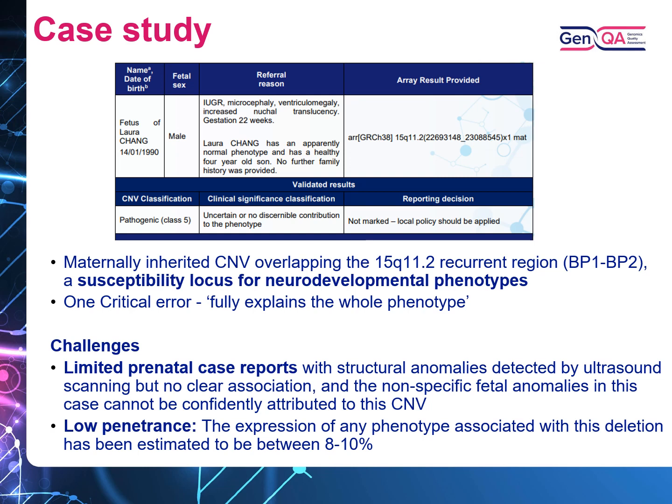Here we present the same 15q CNV as discussed for postnatal. It is a maternally inherited CNV overlapping the region of recurrent loss. It involves the NIPA1 neurodevelopmental locus that is known to have incomplete penetrance and variable expressivity. There are a limited number of prenatal case reports with structural anomalies detected by ultrasound; however, there is no clear association and the nonspecific fetal anomalies in this case cannot be confidently attributed to this CNV. Multiple clinical significance classifications are accepted, with the sole critical error given to a participant who stated that the CNV was wholly responsible for the phenotype — likely because this participant hadn't uncoupled the CNV classification from the clinical significance.